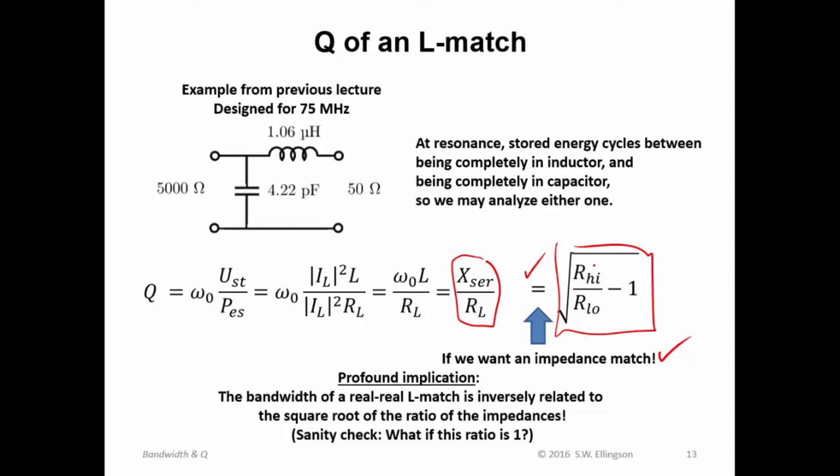Let me say that again. Here's the ratio of the impedances that we try to match. And it turns out that that gives us a Q parameter. And Q is inversely proportional to bandwidth. So that's what I mean by the bandwidth of the real-to-real L match is inversely related to the square root of the ratio of the impedances, at least approximately, because we have this minus one here.